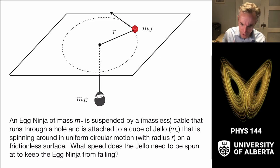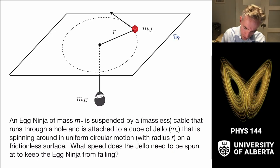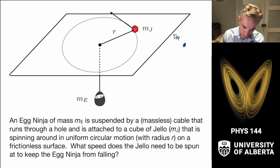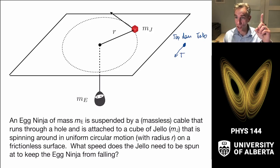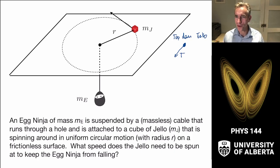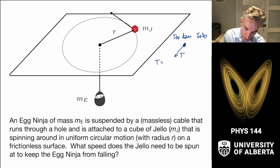I want to consider the free body diagrams of the objects. Taking a top-down view of the jello: what are the forces on the jello? There is a tension in the string pulling it toward the center of the circle, T. There's also a normal force pushing up from the table and mg pulling it down, keeping it on the table, but in the top-down view there's just one force: tension T. That tension must provide the centripetal acceleration v squared over r times the mass of the jello.